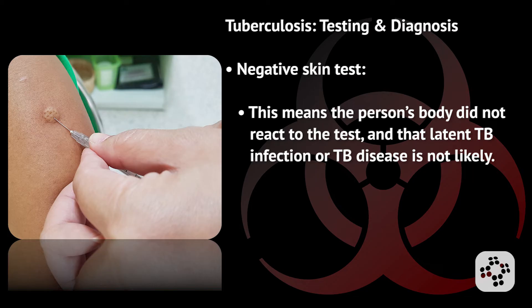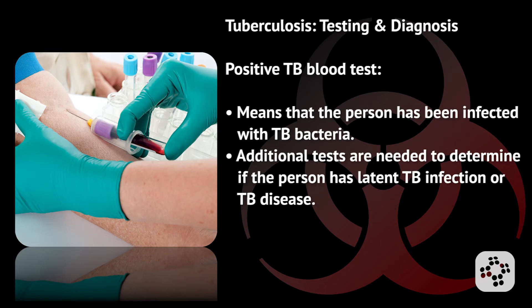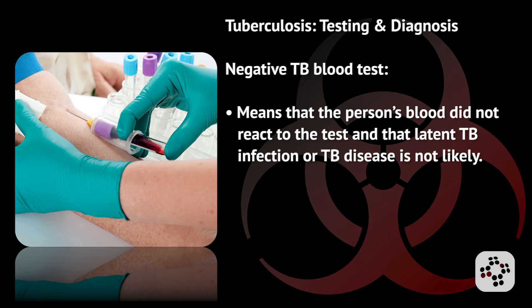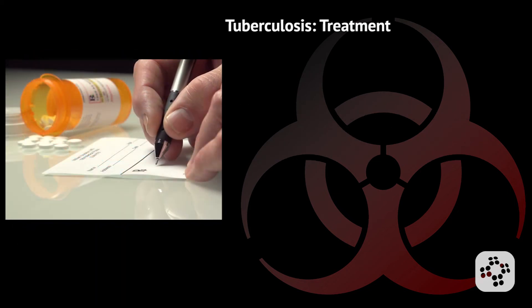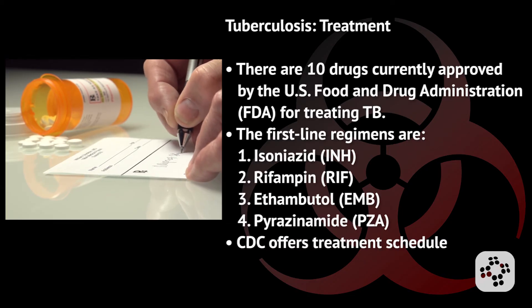The second test is a blood test, also called the interferon-gamma release assays, or IGRAs. A healthcare provider will draw a patient's blood and send it to the laboratory for analysis. A positive TB blood test means the person has been infected with TB bacteria, and additional tests are needed to determine if the person has latent TB infection or TB disease. A negative result means the person's blood did not react to the test and that latent TB infection or TB disease is not likely.